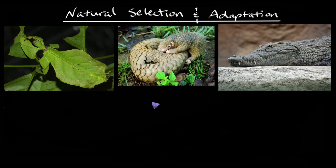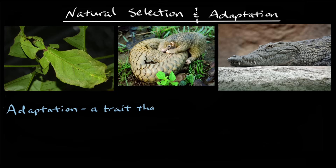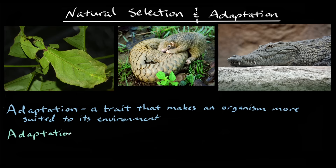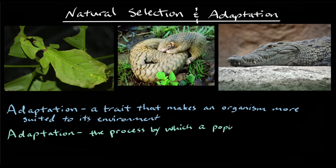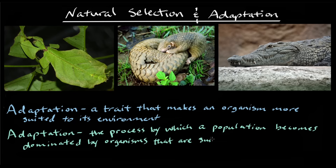But what people often miss about adaptations is that they all help organisms survive and reproduce in a particular environment. The word adaptation can refer to a trait that makes an organism more suited to its environment, but it can also mean the process by which a population becomes dominated by organisms that are suited to their environment.